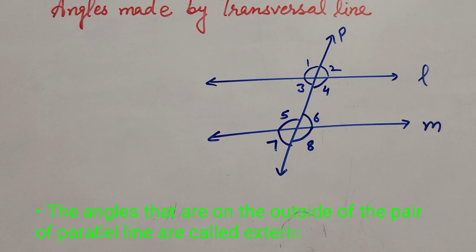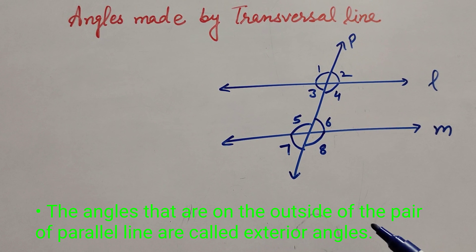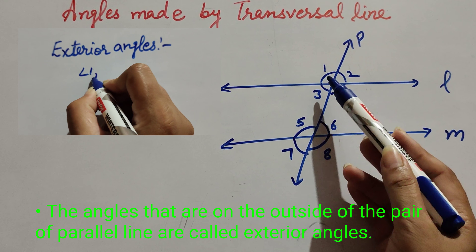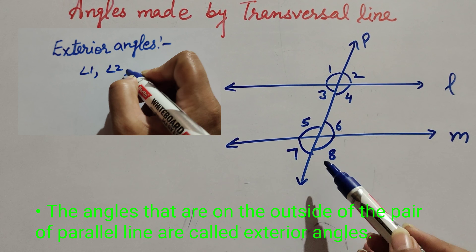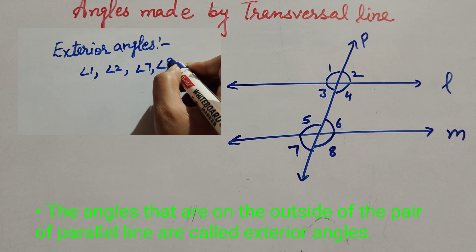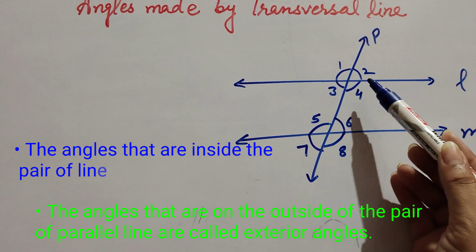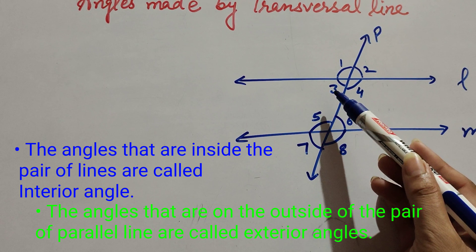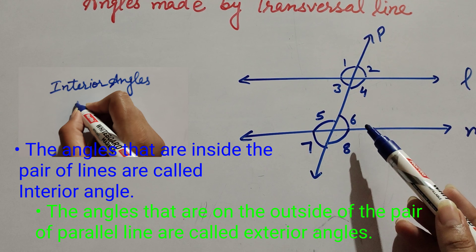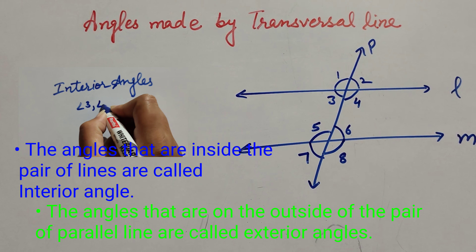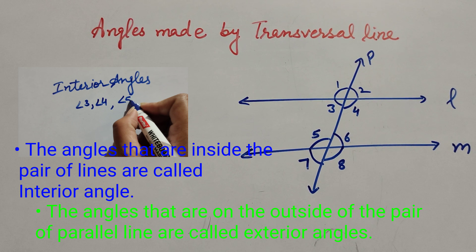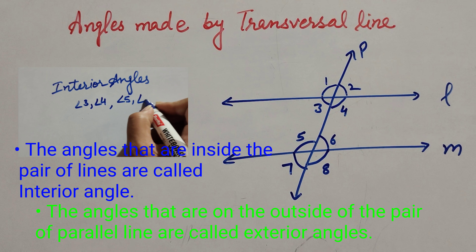The angles that are on the outside of the pair of parallel lines are called exterior angles. In this figure, angle 1, angle 2, angle 7, and angle 8 are exterior angles. The angles that are inside the pair of parallel lines are called interior angles. Angle 3, angle 4, angle 5, and angle 6 are interior angles.